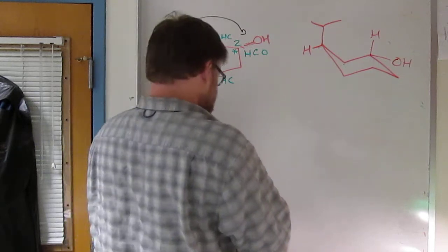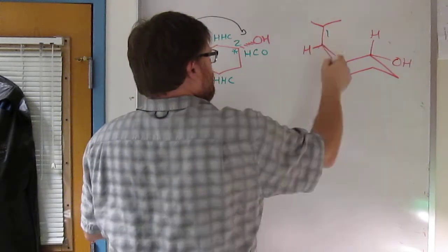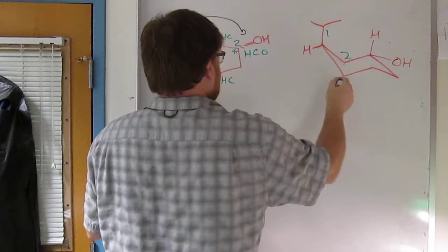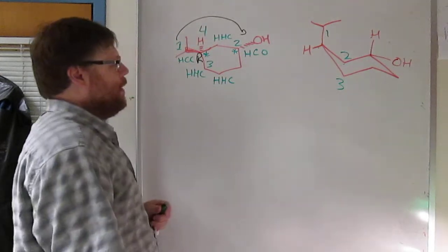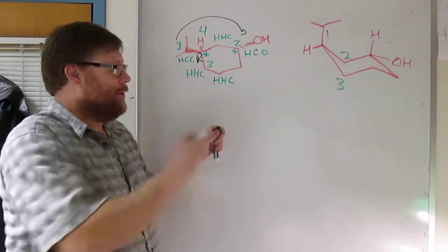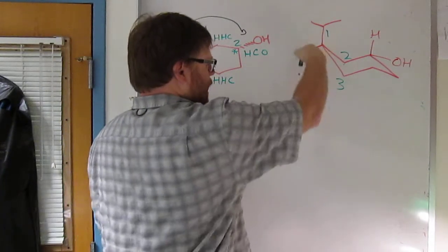And again, your priorities are going to stay the same. So you don't have to redo those. So the isopropyl is one. The bit going around to the alcohol winds up being two. And this one is three. And again, the H is exactly sideways.